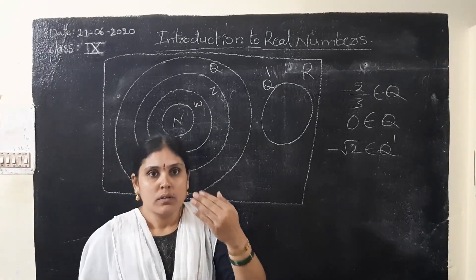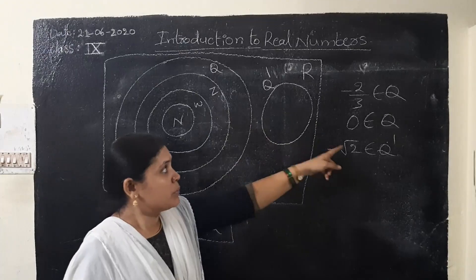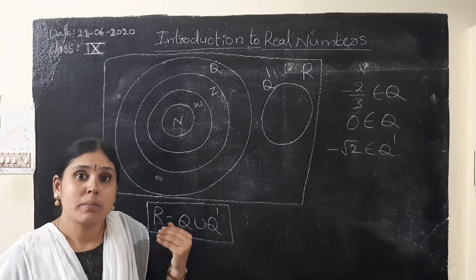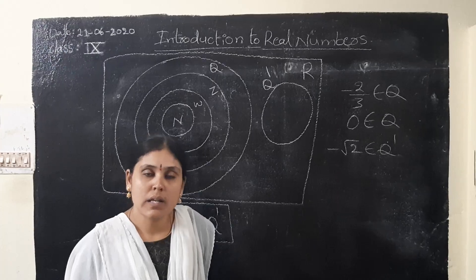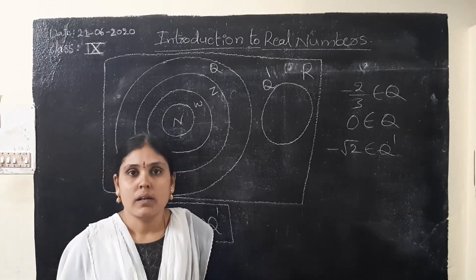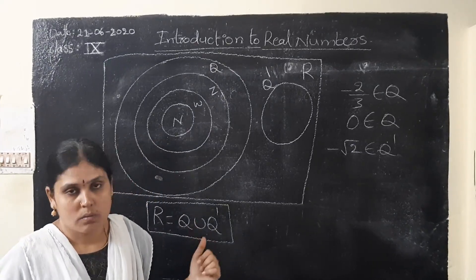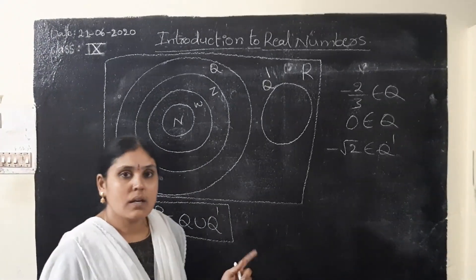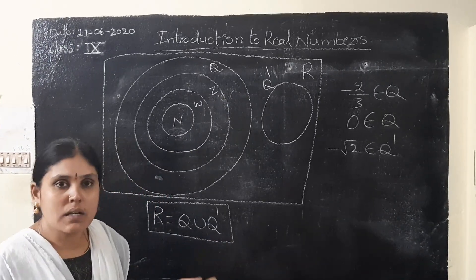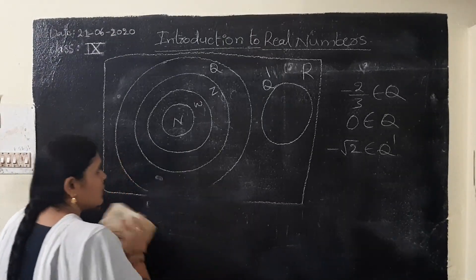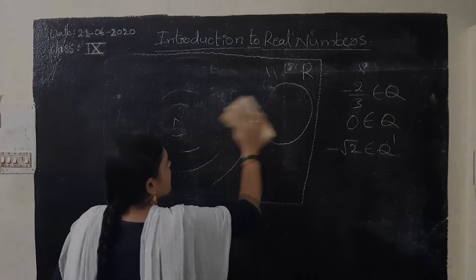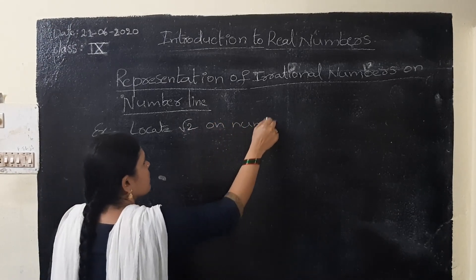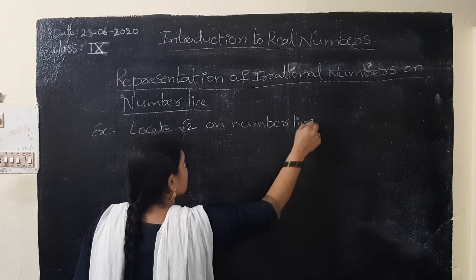Up to now you learnt about rational numbers and representation of rational numbers on a number line. But representation of irrational numbers on a number line is also possible. We can represent irrational numbers also on the number line. How to represent irrational numbers on the number line — we will see now. See children, how to represent irrational numbers on the number line. Let us take one example: take the example of root two. How to represent root two on the number line. Locate root two on the number line.